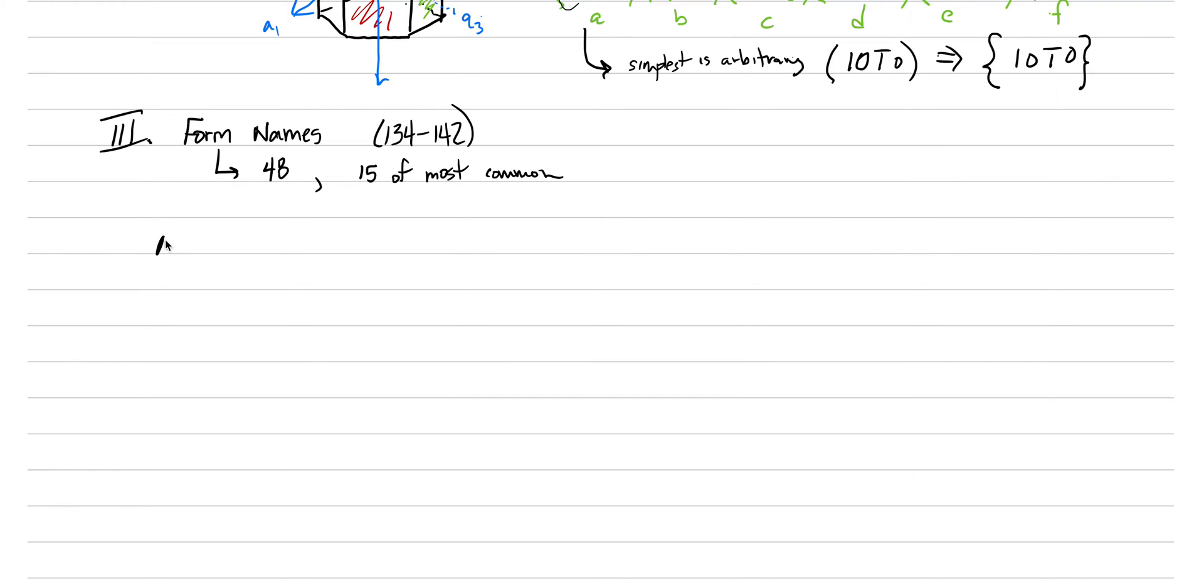Remember, there are open forms and closed forms. We'll first start with the open forms that you need to be able to know and recognize. The simplest open form is called a pedion, which is nothing more than a single face. The next type is two parallel faces, called a pinacoid.